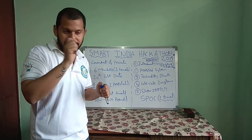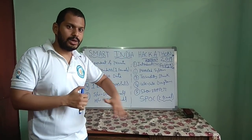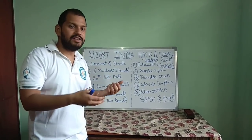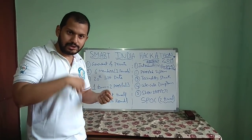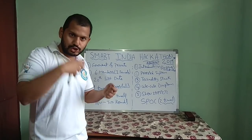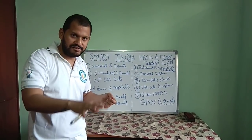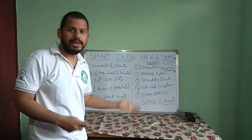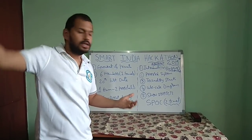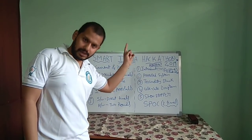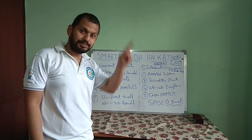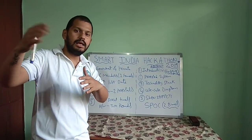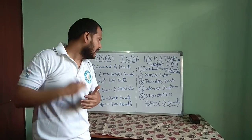Once you get activation from your SPOC, you will have the chance to upload your abstract or proposal. After uploading, you need to go to the SPOC again so they can verify your abstract — checking whether it follows the proper format given by Smart India Hackathon. Only after the SPOC activates it will it go to the Smart India Hackathon panel. So you have to meet your SPOC two times: once for team registration, and once for proposal submission and verification.